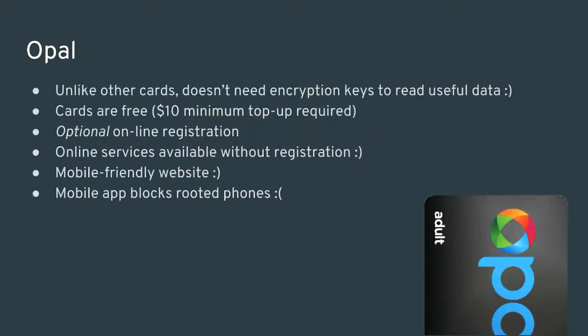Opal is a fairly nice system to work with and doesn't require any encryption keys to get useful data — this appears to be a design decision by Transport for NSW. By comparison, London's Oyster card is produced by the same vendor using the same card technology and doesn't appear to have any open files. San Francisco's Clipper card, also by the same vendor, has even more data in its open files. Unlike literally every other system in Australia, the Opal card offers online services without registration, including top-ups, and a mobile-friendly website.